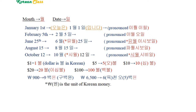A dollar is 불 in Korean. So one dollar is 일 불, five dollars is 오 불, ten dollars is 십 불, twenty dollars is 이십 불, and one hundred dollars is 백 불. The unit of Korean money is 원. Nine hundred won: 구백 원. Six thousand five hundred won: 육천오백 원.